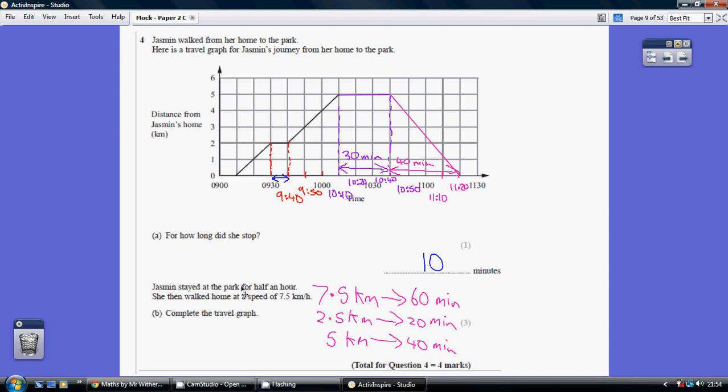Now, Jasmine stayed at the park for half an hour. So, first things first, we know that's going to be three squares where the distance from home remains unchanged. So, we need a horizontal line here, 10, 20, 30 minutes. So, that's that bit there.